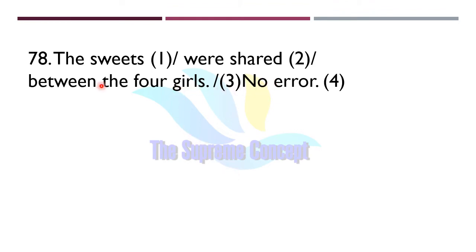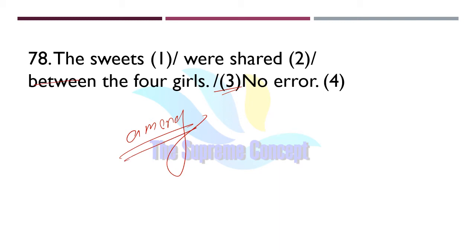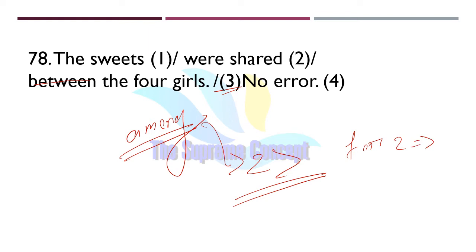Question number 78: 'The sweets were set between the four girls.' Find out where the error lies. The error lies in part number three — we will use 'among' here, not 'between'. 'Between' is used for two persons or things, while 'among' is used for more than two.